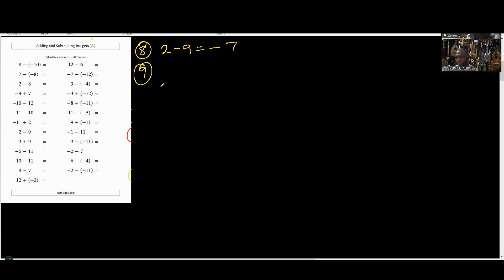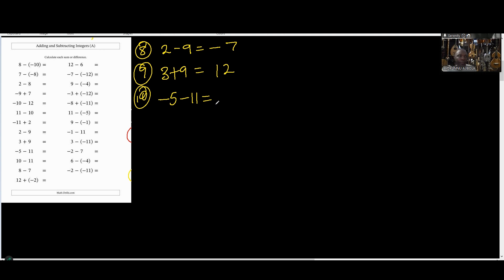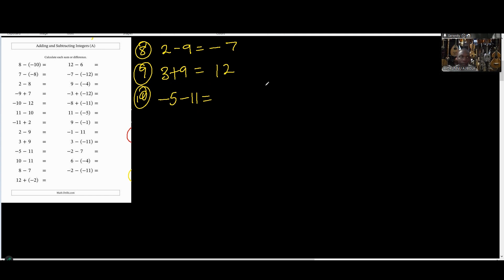Number 9: 3 plus 9. That is just as simple as anything because there's no negative sign, so this gives us 12. Number 10: negative 5 and negative 11. The two numbers are both negative, so the answer should be negative — because we're not multiplying. It's like having 5 negatives and adding 11 negatives, so negative 16 altogether.